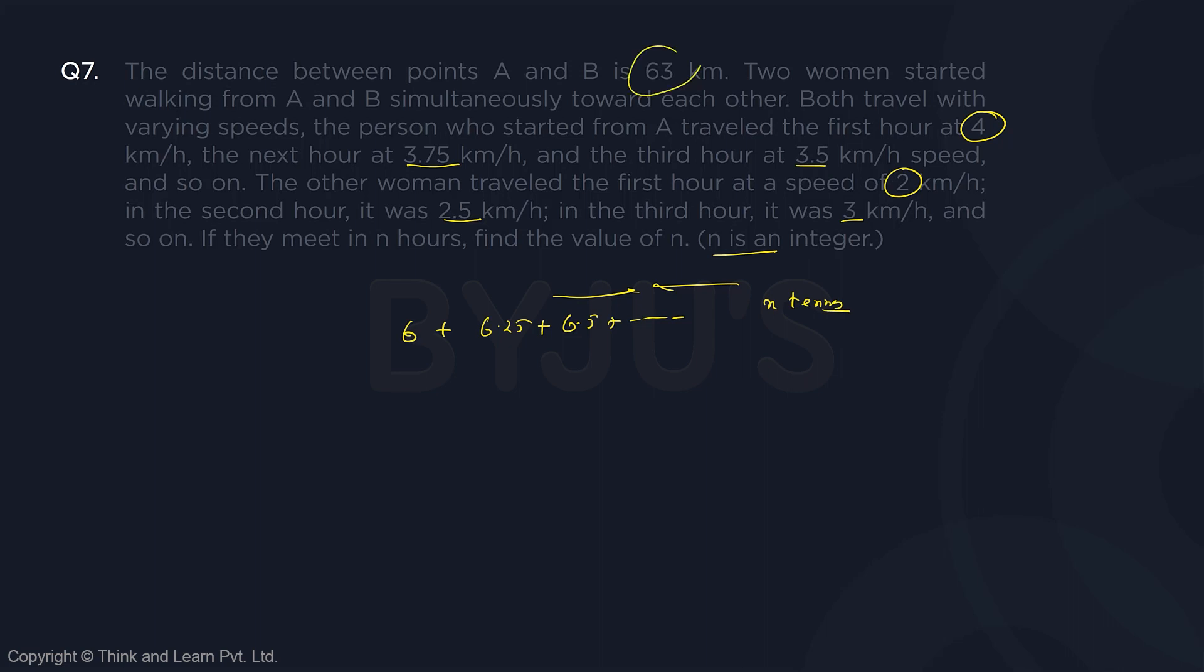This should be equal to the initial distance, that is 63 kilometers. Use the formula of sum of AP, that is n by 2, 2A that is 12, plus n minus 1 into D. Here D is 0.25, should be equal to 63.